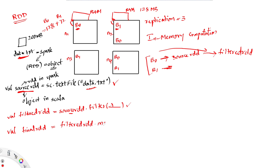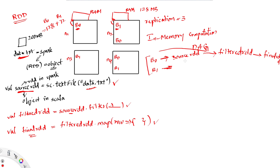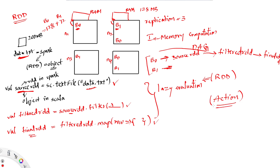Then we create a finalRDD by applying a map operation on top of filteredRDD. Spark again extends the lineage, recording that finalRDD is created on top of filteredRDD. This lineage is called a DAG — Directed Acyclic Graph — in Spark. It cannot form cycles, hence acyclic. Spark builds this DAG instead of immediately processing data because Spark follows lazy evaluation: transformations on RDDs are not evaluated until we call an action.